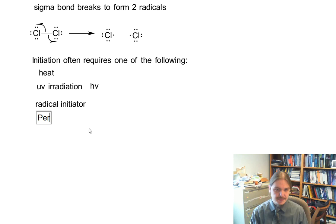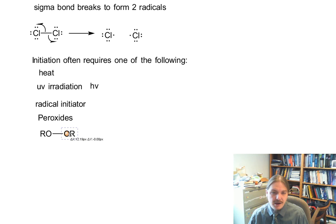And one very common group of molecules used as radical initiators are peroxides. And peroxides have the generic form of ROOR with an oxygen-oxygen single bond in there. And the oxygen-oxygen single bond is not very strong.